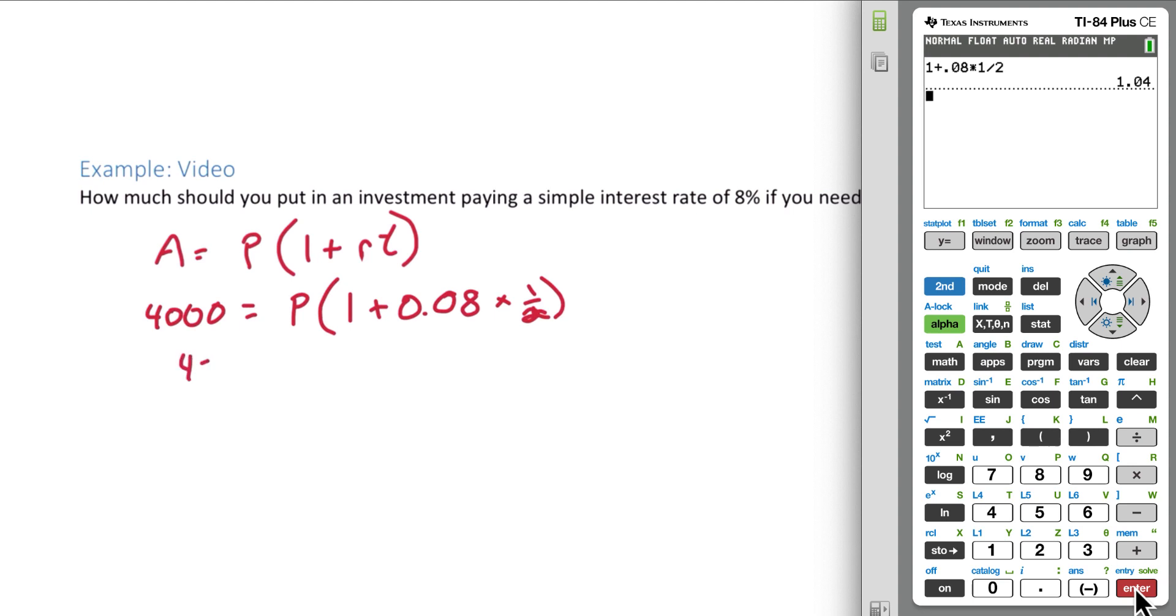So now we have 4,000 equals P times 1.04. Divide both sides by 1.04.